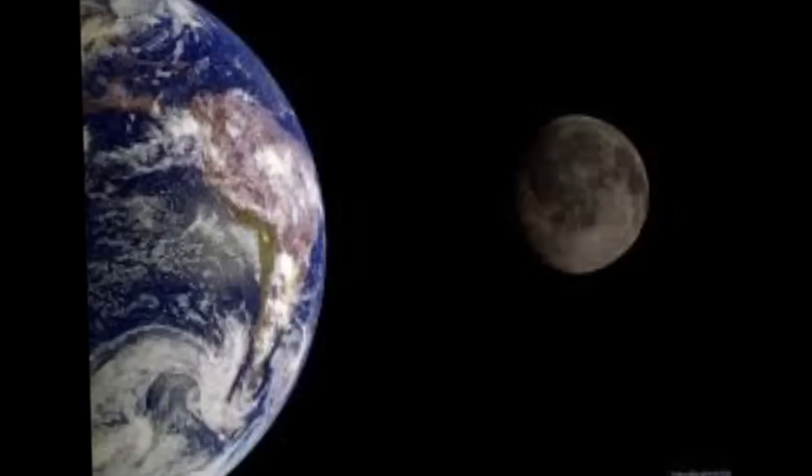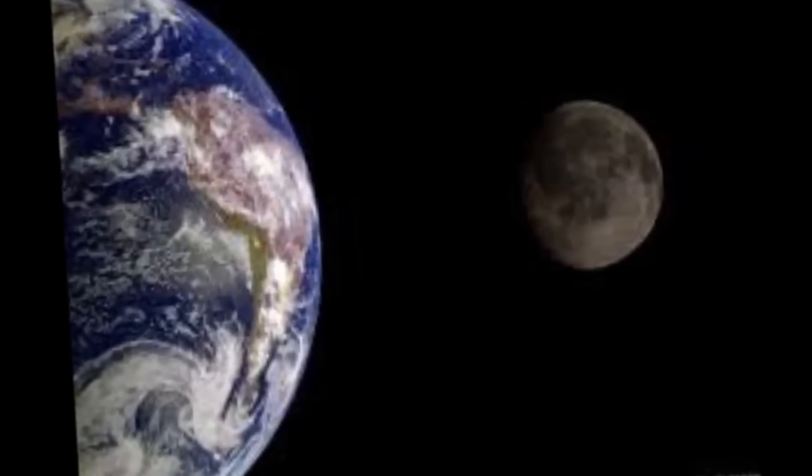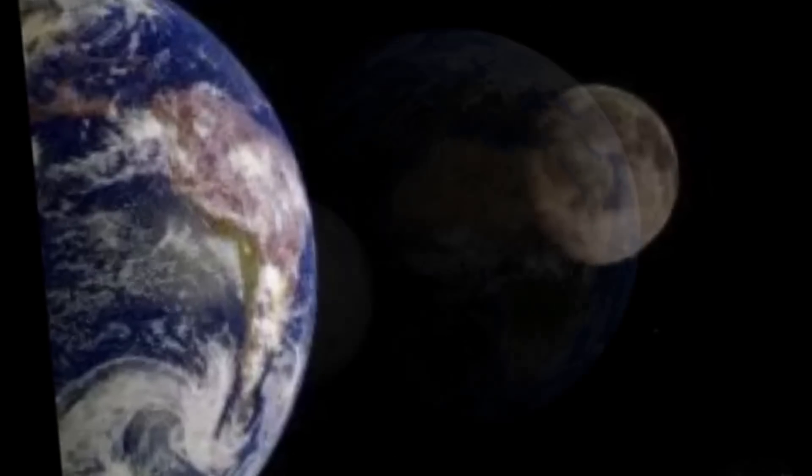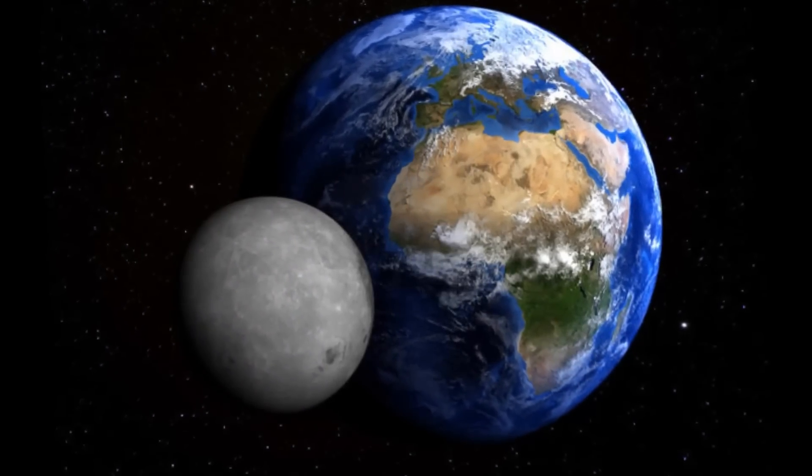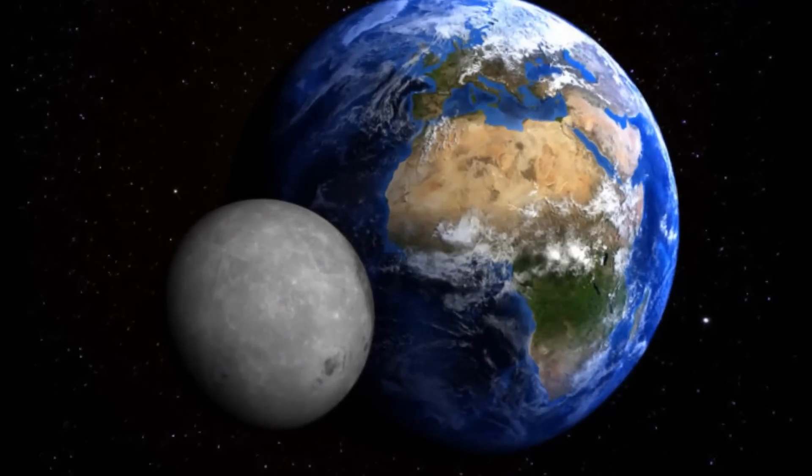These globally distributed faults have emerged as the most common tectonic landform on the moon. An analysis of the orientations of these small scarps yielded a surprising result.